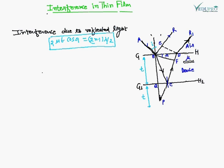Our aim is to find out the effective path difference between the rays BR and DR1 - the two rays emerging outward. For this purpose, we draw a normal DE. This is the path difference we need to calculate.